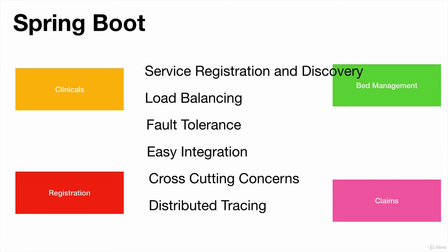Last but not the least, distributed tracing. As the requests go from one microservice to another — for example, clinicals to registration, or registration to clinicals to bed management — we should be able to trace how the requests are going and how the responses are coming back. When something goes wrong, we can exactly pinpoint where it went wrong using distributed tracing.